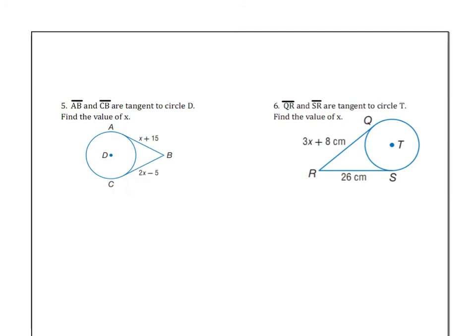Number five, segment AB and segment CB are tangent to the circle. Find the value of X. Well, what we just learned is these two should be congruent. So you just do X plus 15 equals 2X minus 5. So not too hard on this one, kind of regular algebra that you're used to. I wind up with 20 equals X, and then we have to look back. Did we do everything that we needed to? It says find the value of X. So yes, we are done.